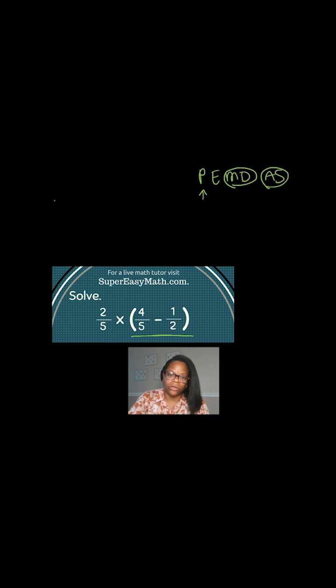I have the smaller problem, 4 fifths minus 1 half. I need a common denominator when I'm subtracting fractions, and I have 10 over 10. Times 2 times 2, this is going to be 8 up here. This is going to be times 5 times 5, and this is going to be 5 here.